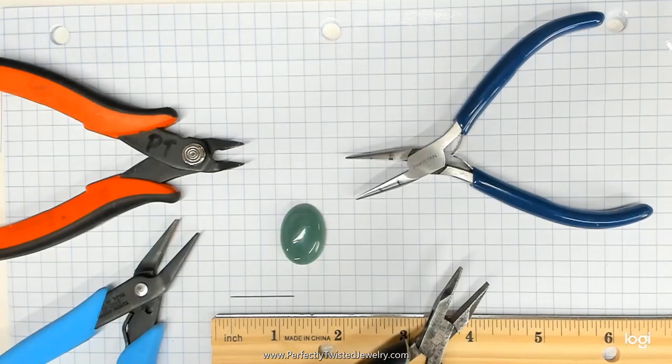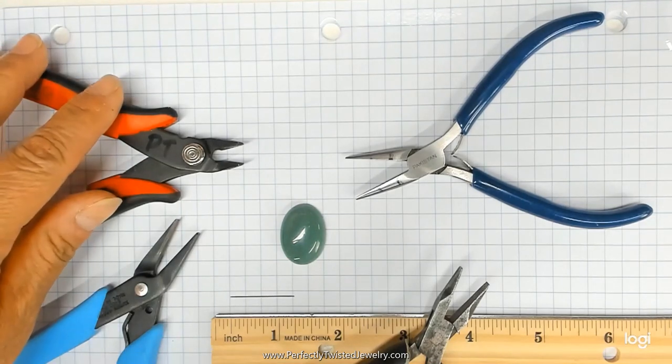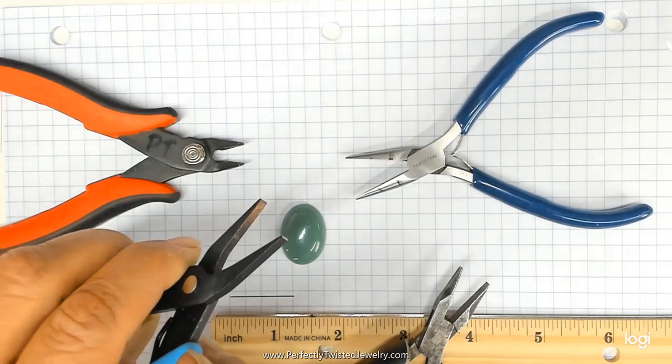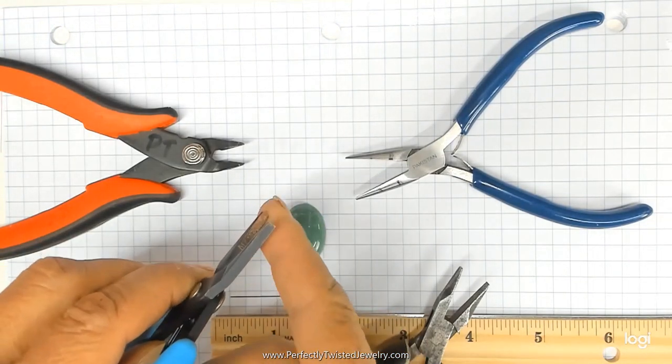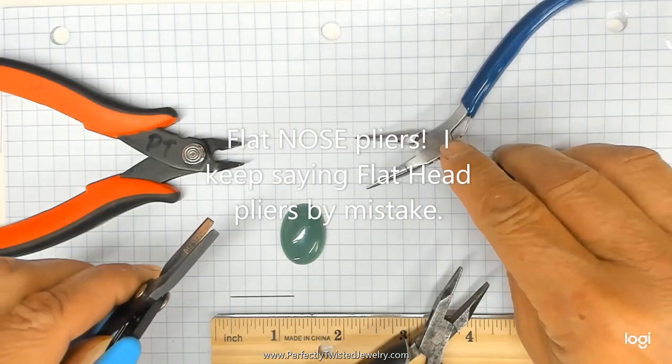The tools that you need to have on hand to make prong settings are a flush cutter for your wire. And then I like to introduce flat nose pliers to my students. A lot of people think that chain link pliers are flat nose, but they're not.